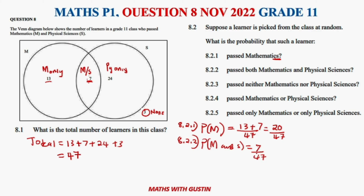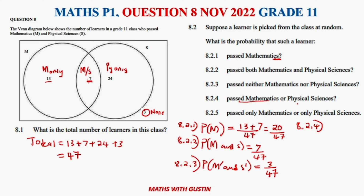Question 8.2.3 asks for those who passed neither Maths nor Physical Science — meaning they did not pass Maths and also did not pass Physics. These are the learners outside the Venn diagram circles, which is 3, giving us 3 over 47.